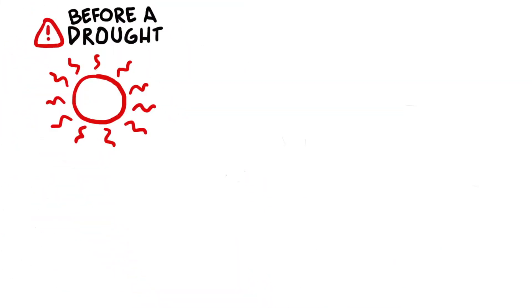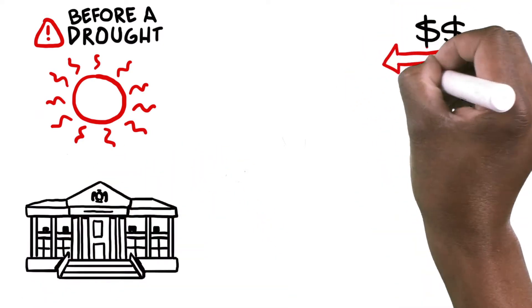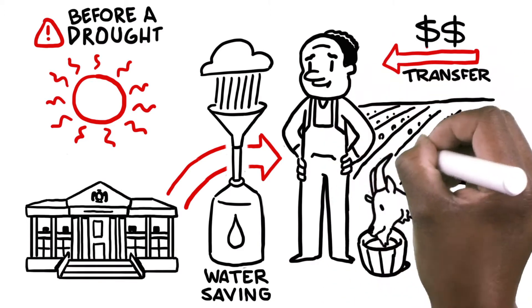In the case of droughts, information is available in time so that governments can extend social assistance programs and also support farmers to protect their animals and crops in advance.